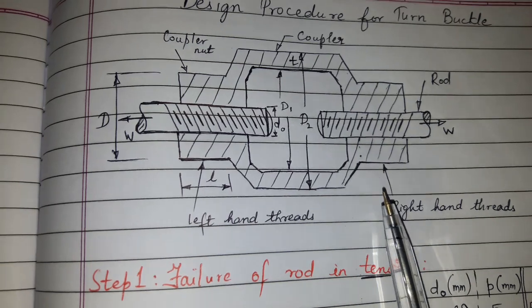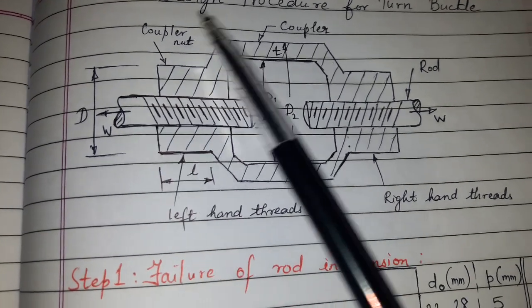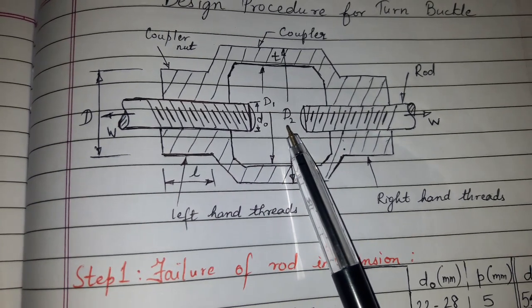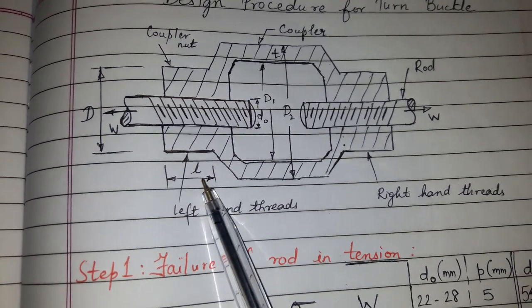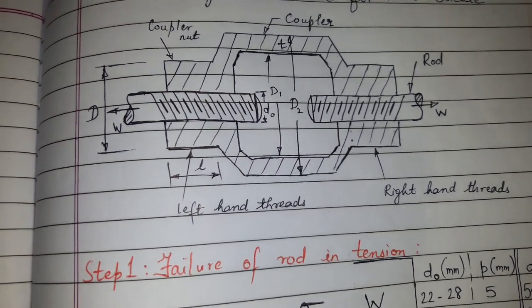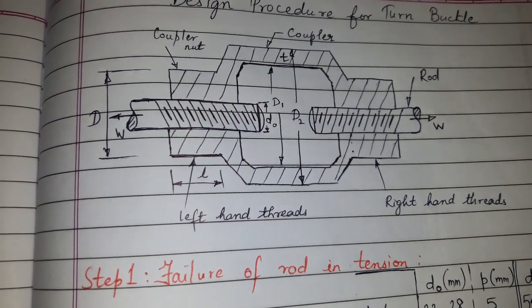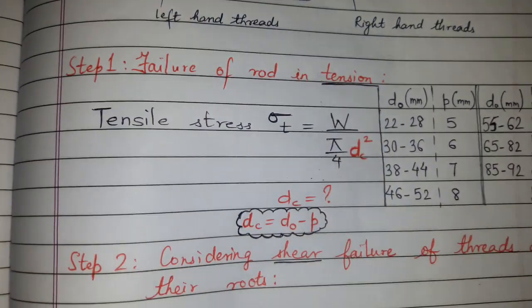In our design procedure, we will be finding the values of everything like D0, D1, D2, small L, total length, and DC which is the core diameter of the rod. So let us see how we will go step by step.